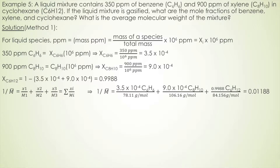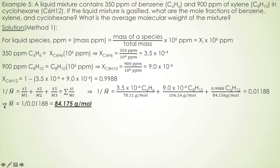Now we can use the equation to calculate average molecular weight in terms of mass fraction: 1 divided by average molecular weight equals the sum of each species' mass fraction divided by its molecular weight. Substituting: mass fraction of benzene (3.5 × 10⁻⁴) divided by MW of benzene (78.11 g/mol), plus mass fraction of xylene divided by MW of xylene, plus mass fraction of cyclohexane divided by MW of cyclohexane. Taking 1 divided by that result gives an average molecular weight of 84.175 g/mol.